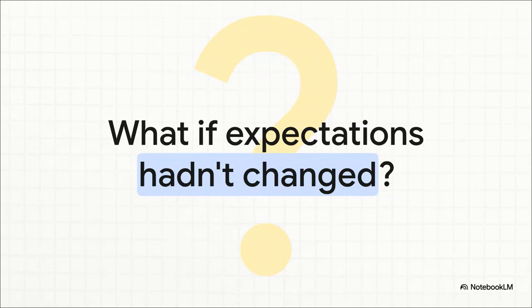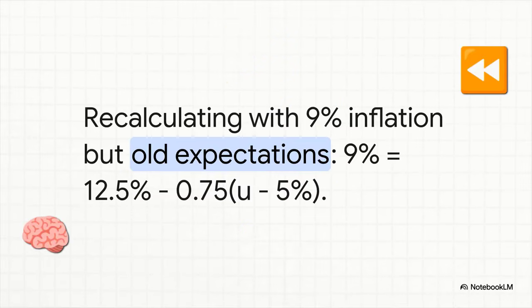Okay, to really hammer this point home, let's play a little what-if game. What if inflation still dropped to 9% in year two, but people's expectations didn't change? What if everyone was still pessimistic and they were stuck thinking inflation would be that high 12.5% from last year? So we're going to run the same calculation. The only thing we're going to do is swap out that new expectation and put the old higher 12.5% back in its place. Everything else is identical. The only variable we're changing is what's in people's heads. It's just psychology.